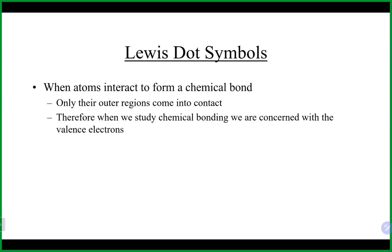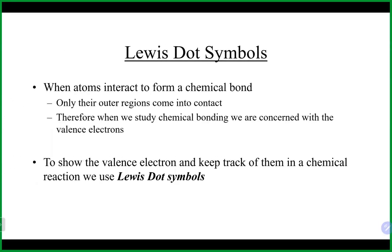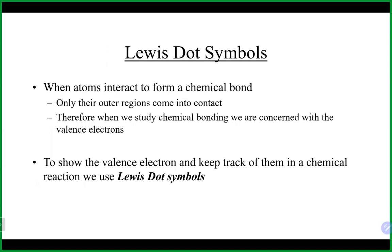The way we oftentimes represent bonding in chemistry is to use Lewis dot symbols, also sometimes more generically called electron dot symbols.